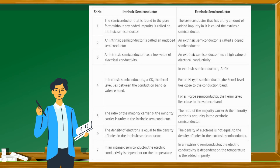Number 7: In an intrinsic semiconductor, the electric conductivity is dependent on the temperature. In an extrinsic semiconductor, the electric conductivity is dependent on both the temperature and the added impurity.